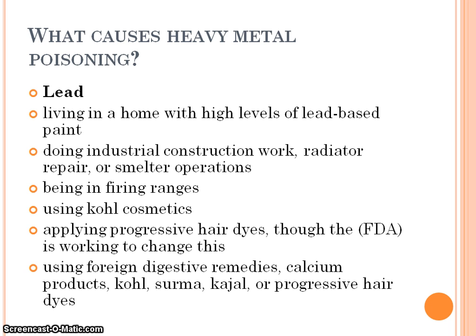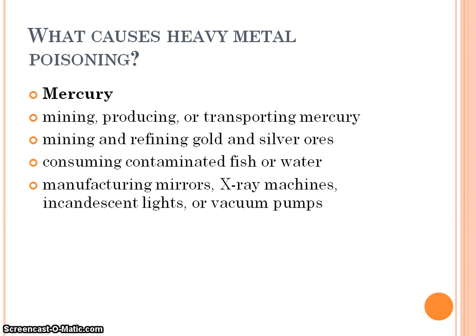Lead poisoning is associated with living in a home with high levels of lead-based paint, doing industrial construction work, radiator repair or smelter operation, being in a firing range, using certain cosmetics, and applying progressive hair dyes — though the FDA is working to change this — or using foreign digestive remedies like kohal, surma, or kajal. Mercury poisoning can result from mining, producing, or transporting mercury, mining and refining gold or silver ores, consuming contaminated fish or water, or manufacturing mirrors, X-ray machines, incandescent lamps, or vacuum pumps.